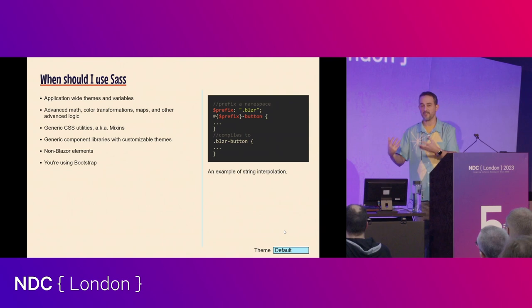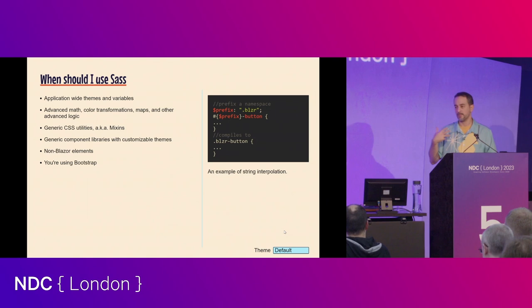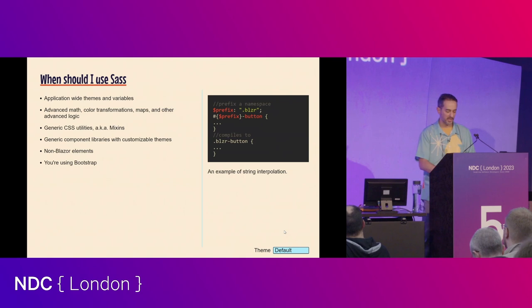Sass is also great for styling things that are not Blazor components. There are things inside your app that may not be actual Razor components, and you want to use regular CSS to style those things — and you can elevate that CSS by using Sass.